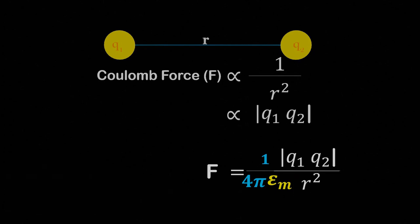But you can ask a question about why the role of 1 upon 4π is important here. Let's try to understand this.